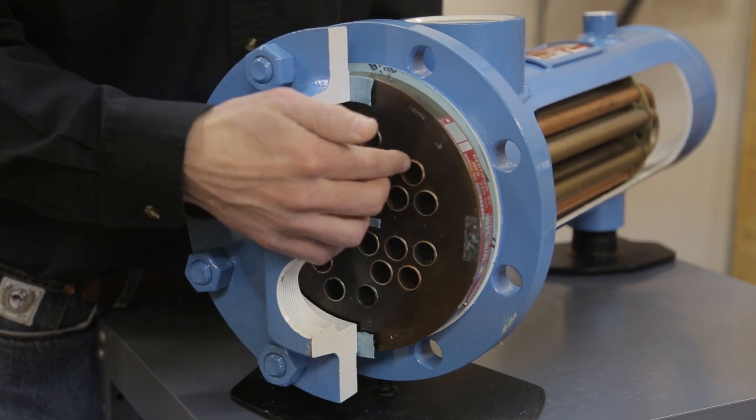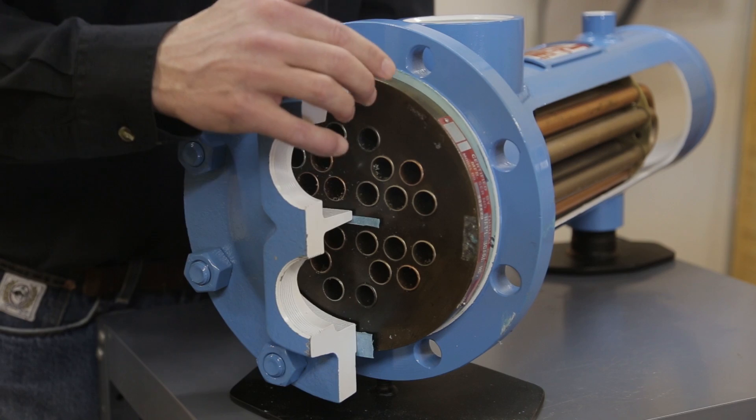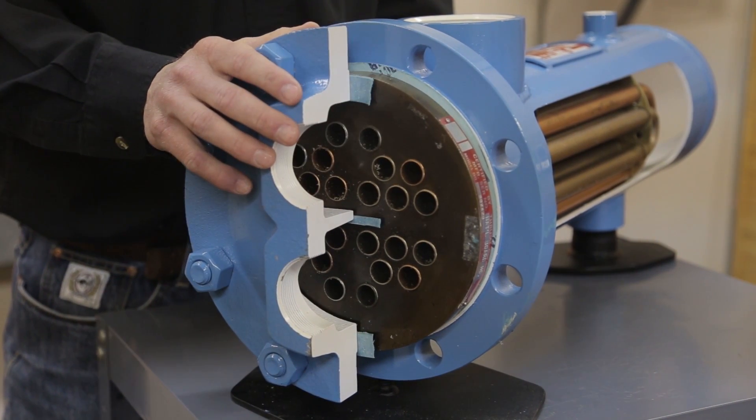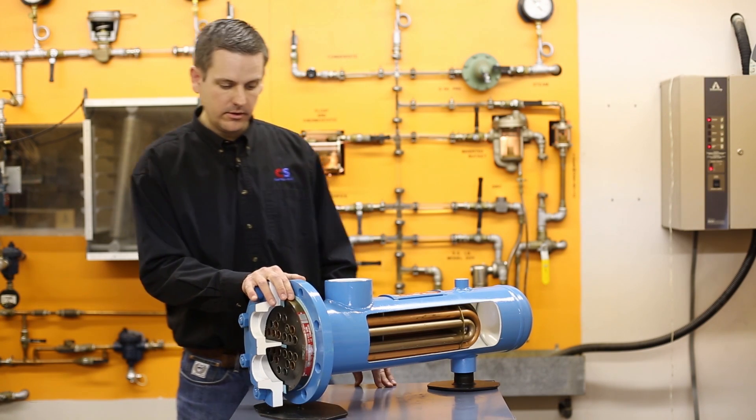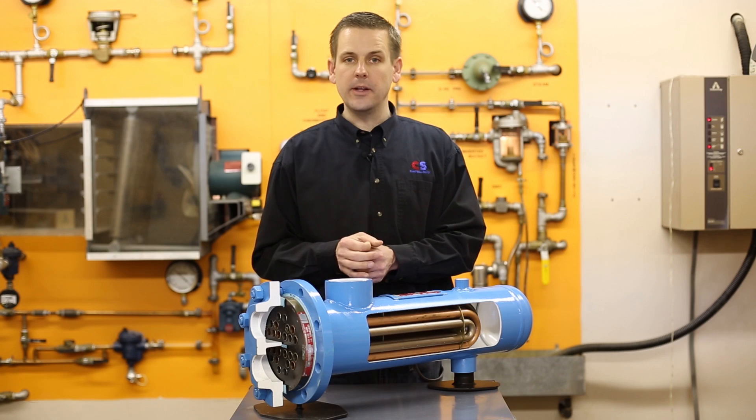In this particular case, this is a single tube sheet. Now, in many states we have what we call double wall tubes where these tubes are actually a tube in a tube. When that's the case, we actually have two tube sheets stacked together.